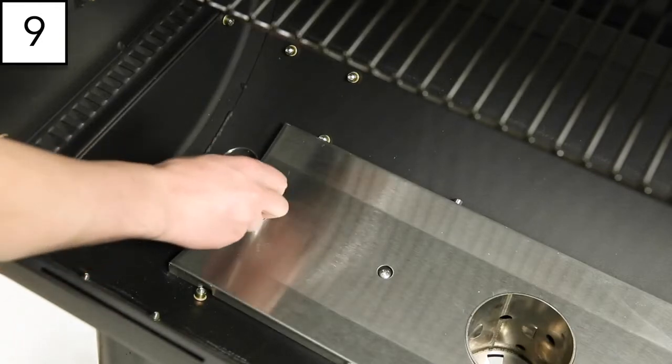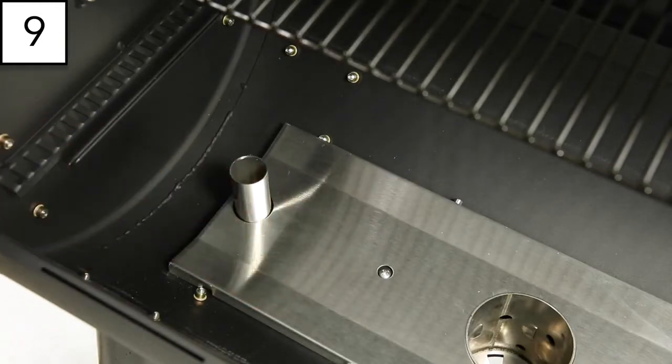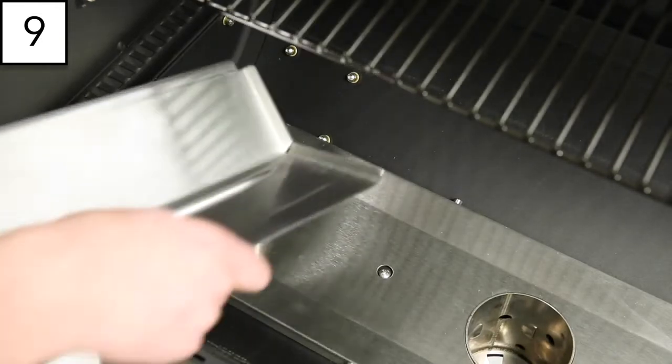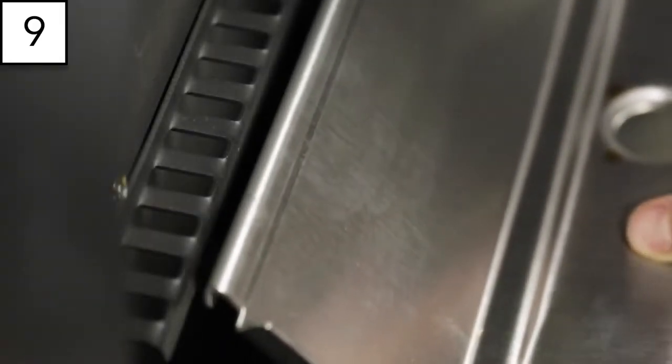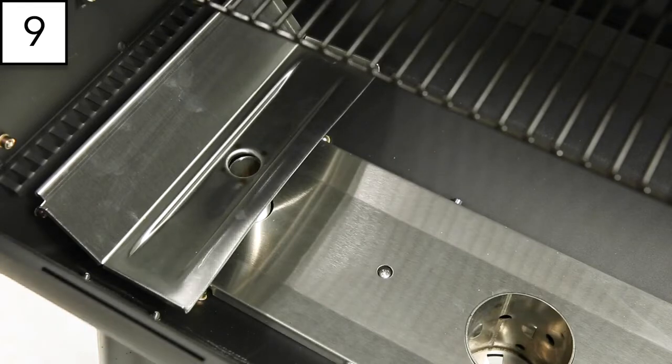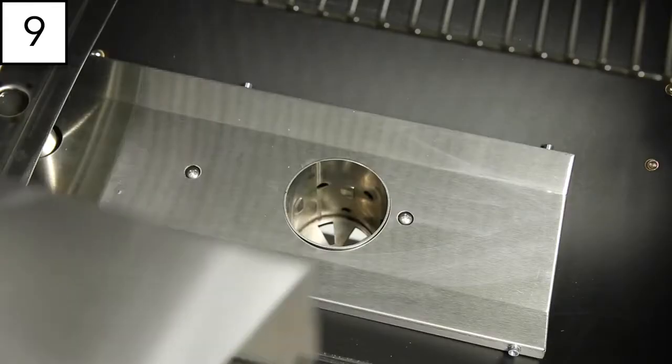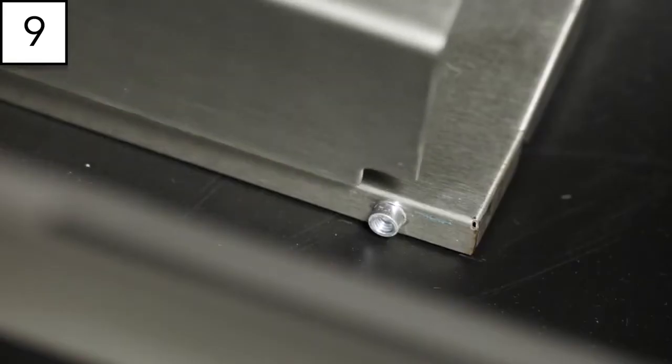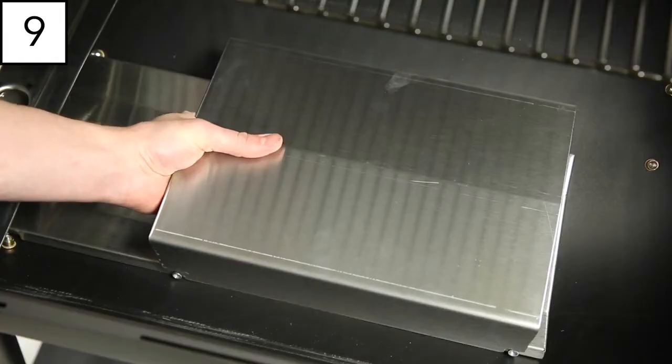Step 9. Next, install the grease management system and heat deflectors. Start with placing the grease tube and grease tray into the left side of the cook box. Use the notches on the grease tray to secure these components onto the lip of the cook box. Insert the heat shield cover into the bottom with the cutouts on each corner aligning with the four bolts.